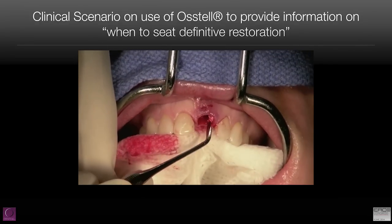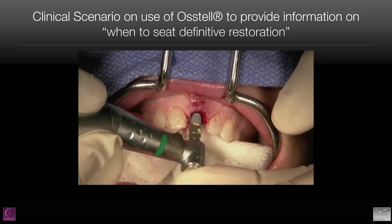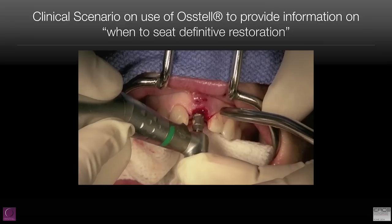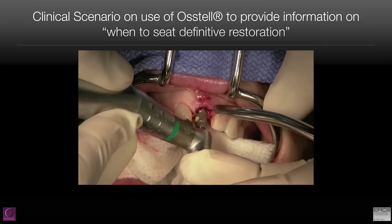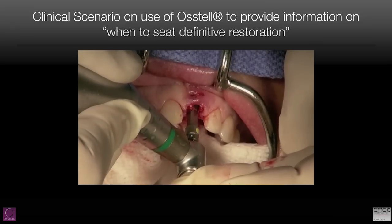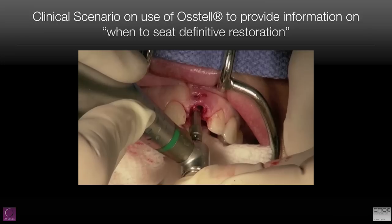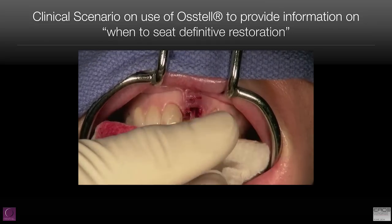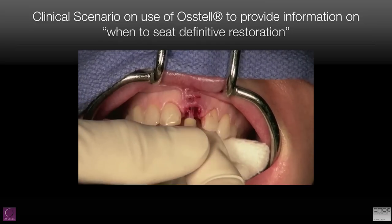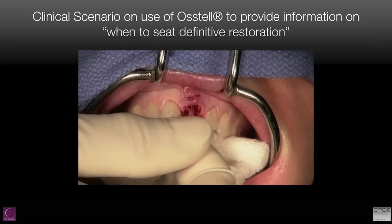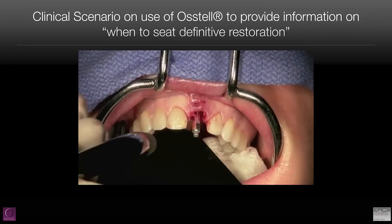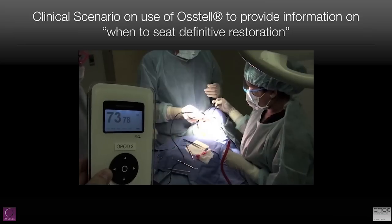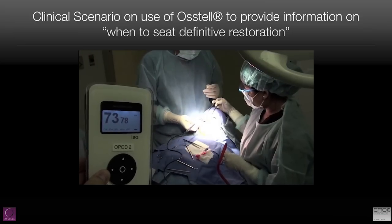We complete our packing of the graft material and insert the implant very, very carefully. At this point, what do you think the insertion torque will be? We can probably achieve 20, 25 newton centimeters. Now, what does 25 newton centimeters tell you? Is it ready to take immediate loading? This is what I mean — they do not have a reliable scale to help you determine whether it's necessary to wait or not.